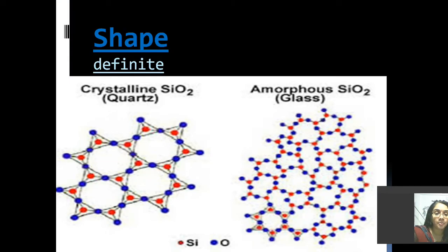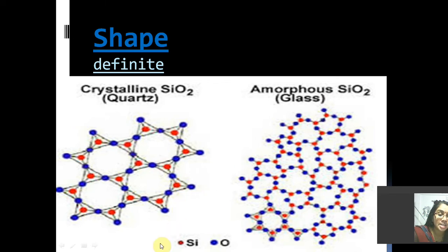The shape difference can be explained using silica as an example. Silicon dioxide can exist in two allotropic forms: one is its crystalline form, which is quartz, and the other is the amorphous form of silica, which we call glass. In crystalline quartz, the silicon and oxygen atoms are well and orderly arranged — you can see how beautifully the particles are packed — whereas in the amorphous form, the silicon and oxygen atoms are not arranged in an ordered way; that is the glass form of silica.